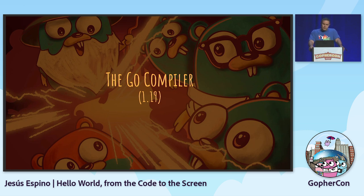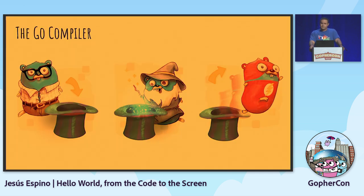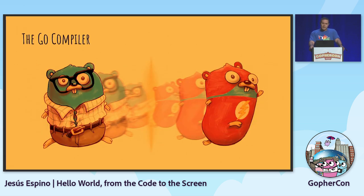How does the Go compiler work? For most people, it is magic. You get your Go code, you put that in the hat, there's some magician that is the Go compiler, and suddenly you have an executable binary - it's super fast, it's amazing. But what happened inside the hat? This is what we are going to see: how that hello world gets converted into a runnable binary.